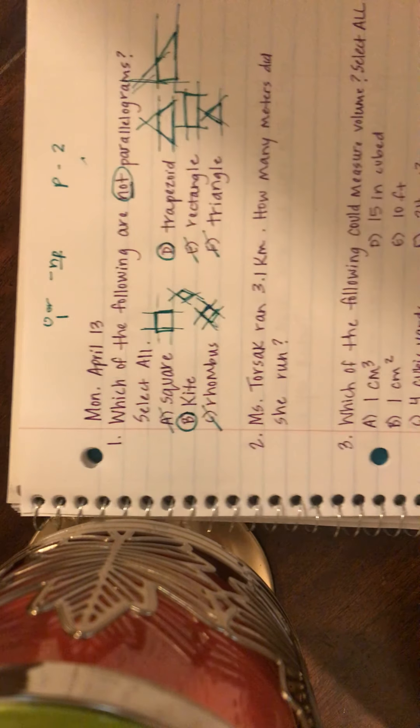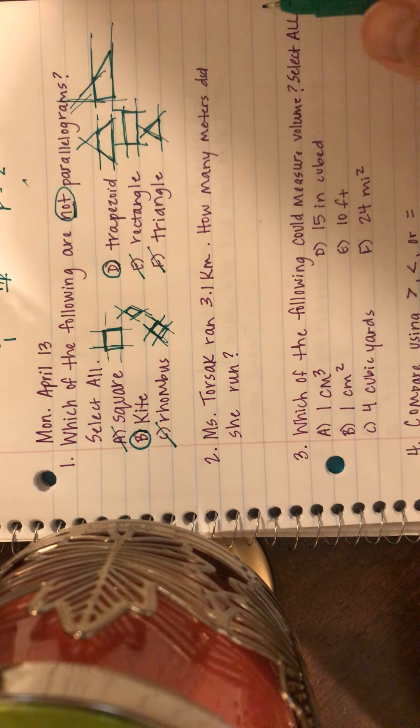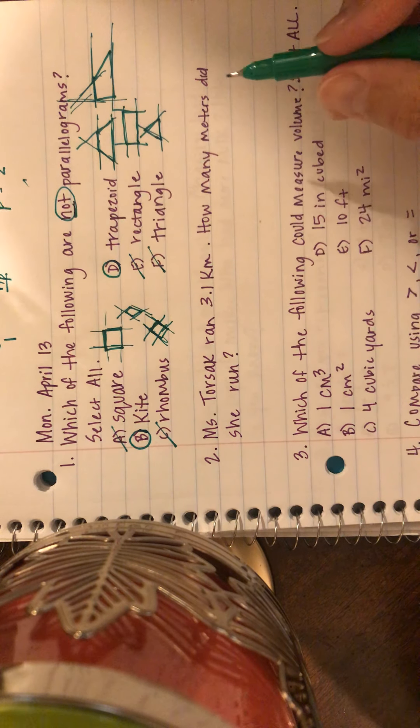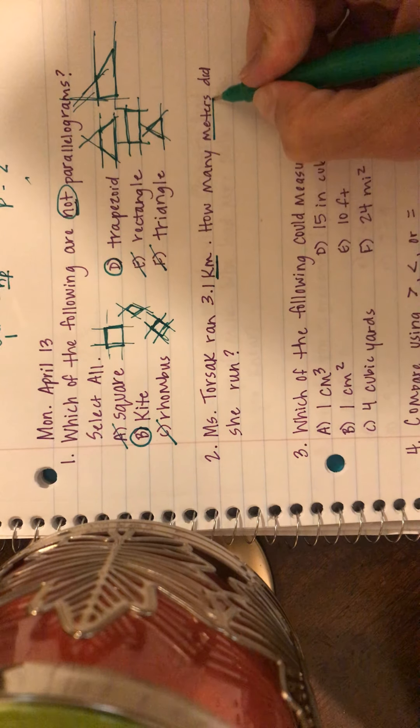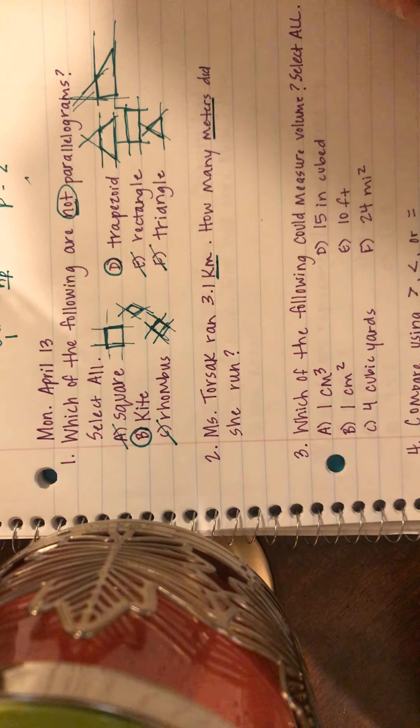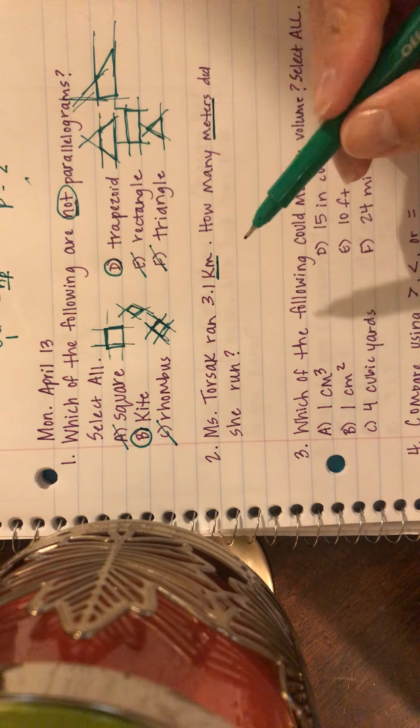Alright, let's move on to number two. On number two it says Miss Torsak ran three and one-tenth kilometers. How many meters did she run? Okay, well if I notice I'm going from kilometers to meters, those are not in the same unit of measure, so I'm going to have to convert.